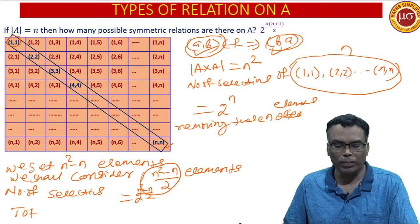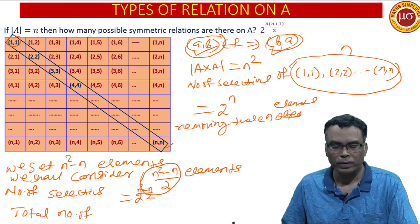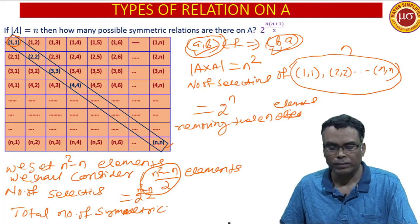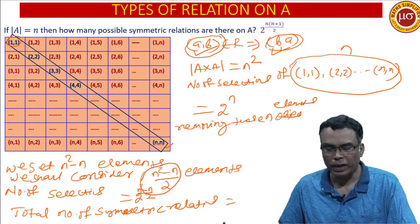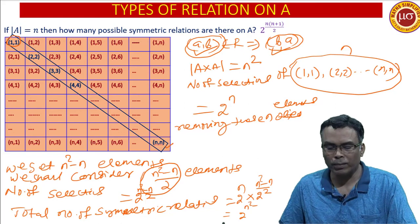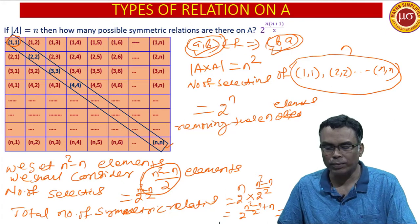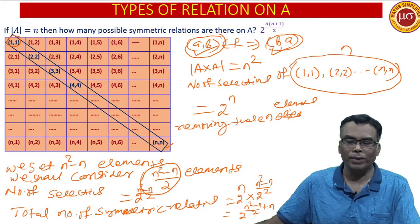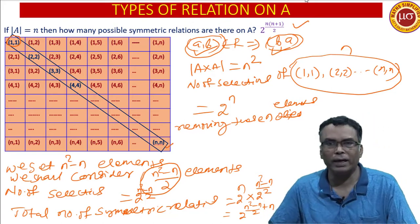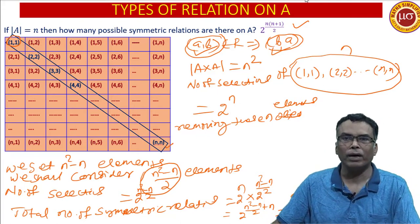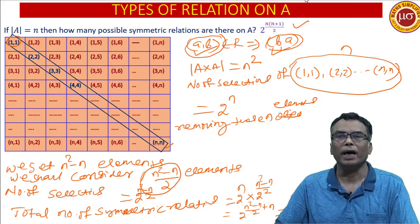So the total number of symmetric relations is 2 to the power N multiplied by 2 to the power ((N square minus N) by 2), which equals 2 to the power (N square minus N by 2 plus N), which simplifies to 2 to the power N(N+1)/2.